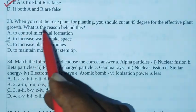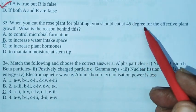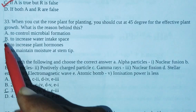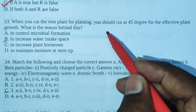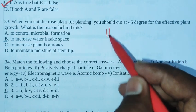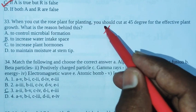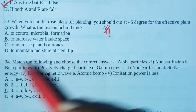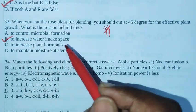Next 33. When you cut the rose plant for planting you should cut at 45 degree for the effective plant growth. What is the reason behind this? When you cut at 45 degree, water intake space increases. So the plant will grow well. Option B is the right answer - to increase water intake space.